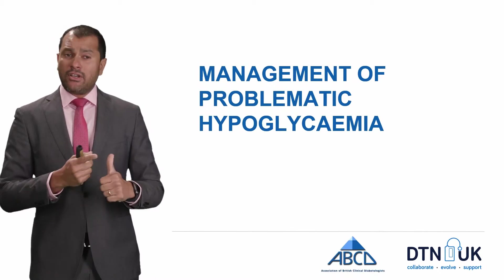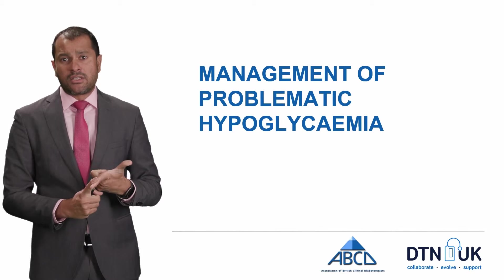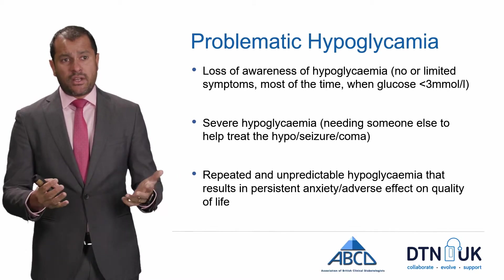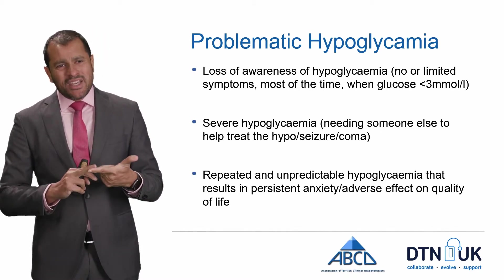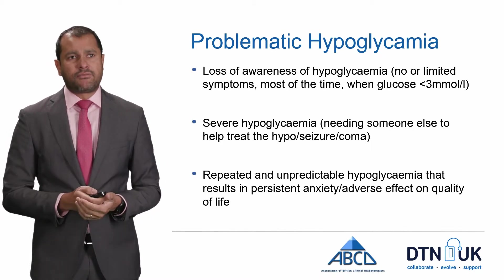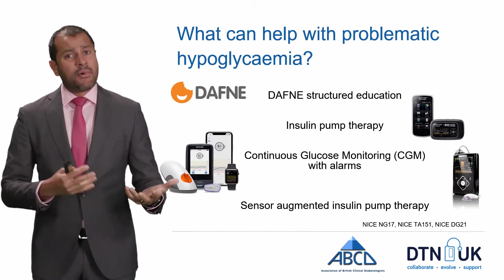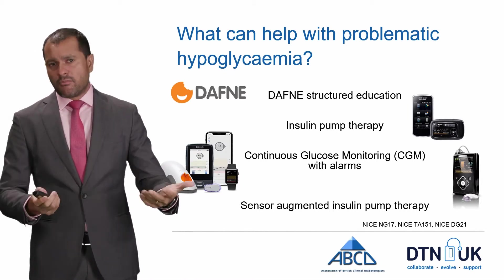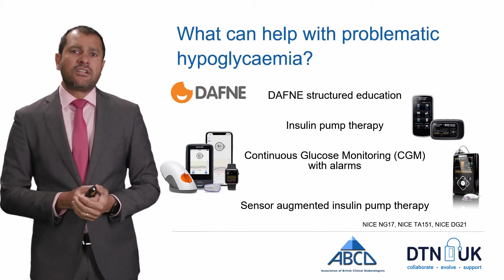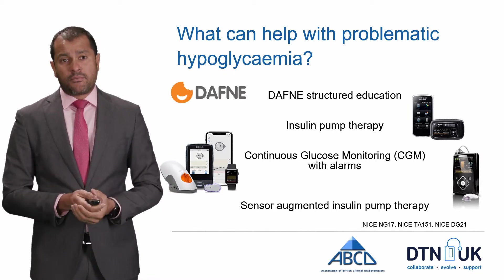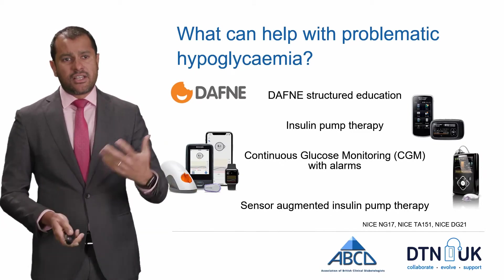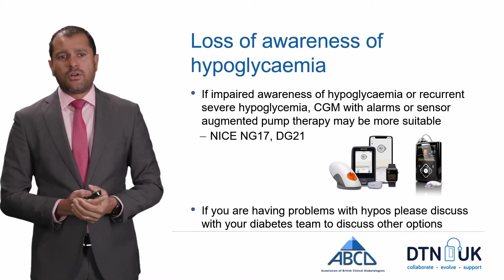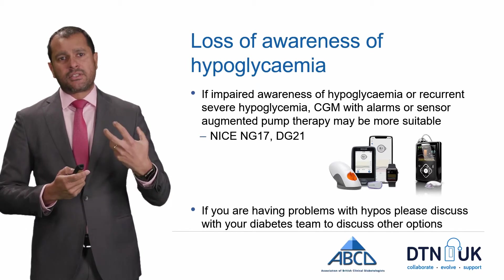If your CGM is picking up a lot of hypos and you think you've got impaired awareness by those questionnaires, what should you do? Problematic hypoglycemia, as defined by NICE, is where you've lost awareness, had recurrent severe hypos needing someone else to help you, or have repeated or unpredictable hypos impacting your quality of life. Daphne itself can restore awareness in about 40% of people with impaired awareness and can significantly reduce hypoglycemia rates. Insulin pump therapy is approved by NICE for problematic hypoglycemia, and in some areas you can also access continuous glucose monitoring with alarms, or sensor-augmented pump therapy, which has been shown to reduce severe hypoglycemia.